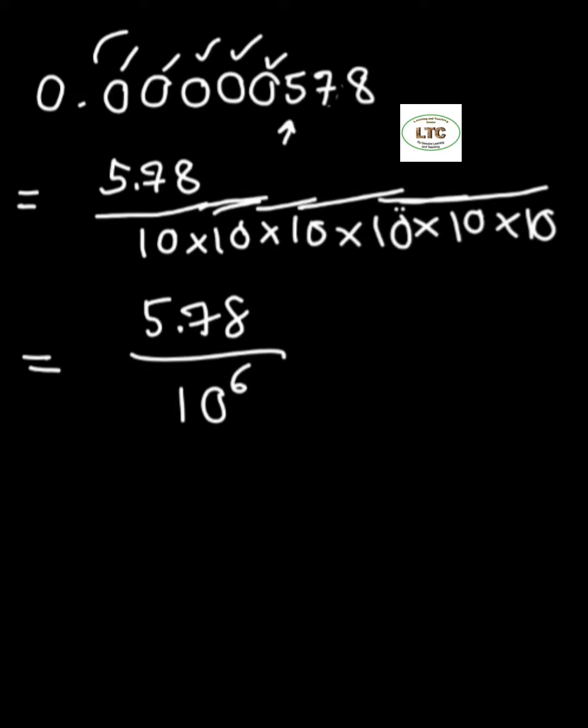So you have to move 1, 2, 3, 4, 5, 6. The decimal moves 6 positions.